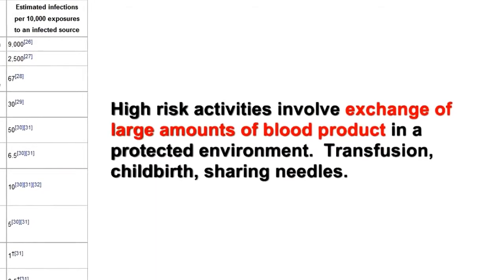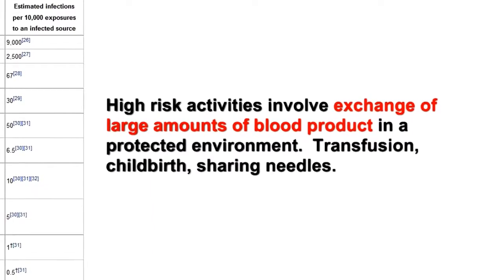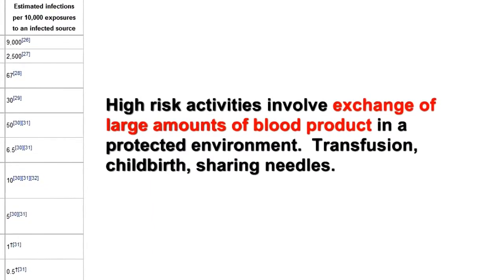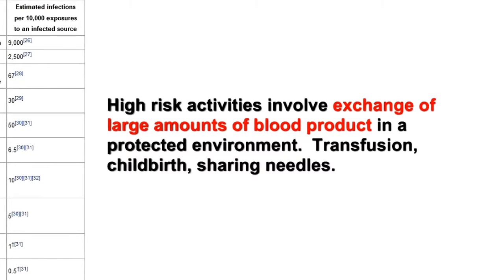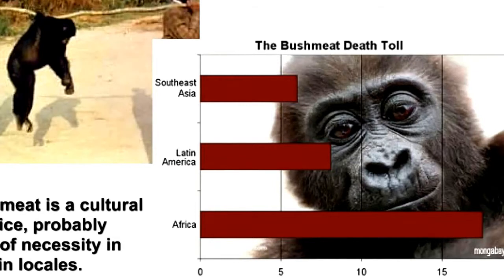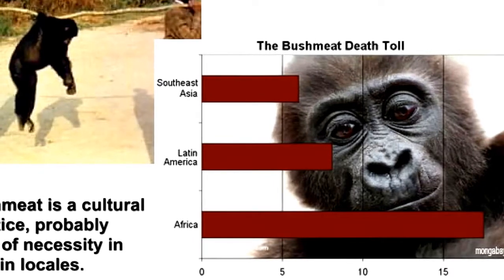We know that SIV and HIV are both spread in the same ways — sex and blood transfers. Blood-to-blood exposures, however, are 900 times more likely to result in infection than sex contact. It's therefore likely that the transmission from primate to human, called a zoonotic event, was the result of hunters trapping, butchering, and eating chimps. The practice of hunting primates for what is called bushmeat is well documented in tribal groups in certain areas.